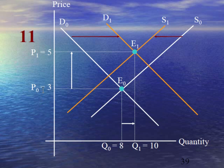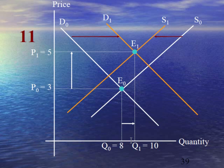Case number 11 explains that rise in demand is more than fall in supply. Here, the new supply curve S₁ intersects the new demand curve D₁ at point E₁. As a result, equilibrium quantity will increase from 8 to 10 and equilibrium price will increase from 3 to 5.